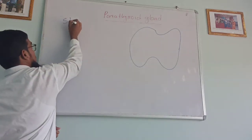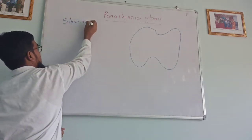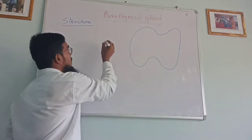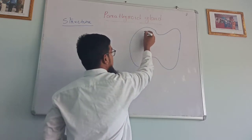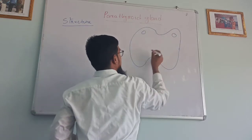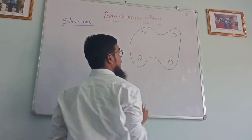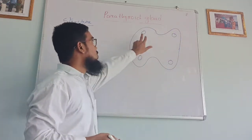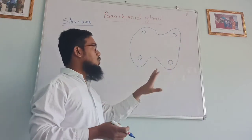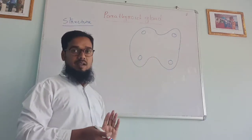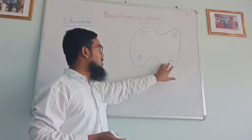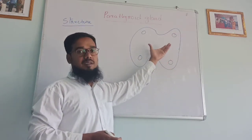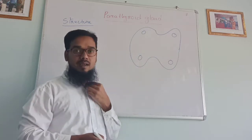If we study the structure of parathyroid glands, parathyroid glands are very small, teeny glands. There are four parathyroid glands which remain behind the thyroid gland. They remain behind the thyroid gland present in our neck.